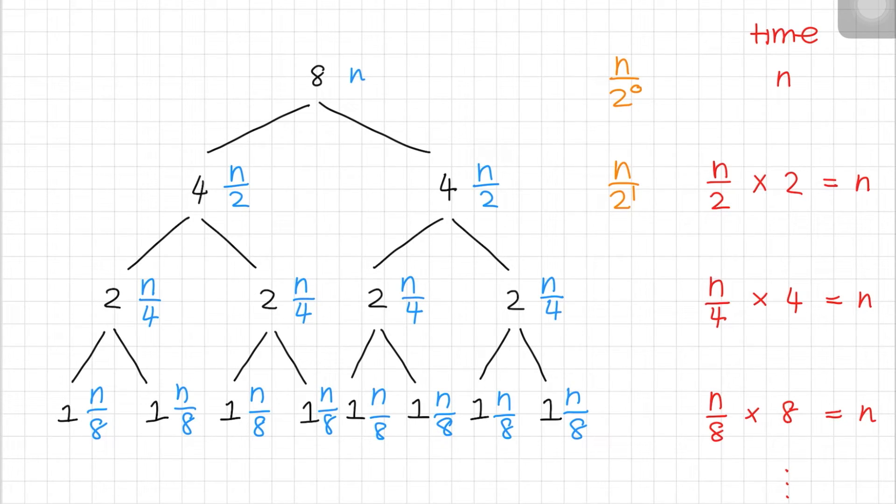Then, for the third level, as you've guessed it, n over 4 is simply rewritten as n over 2 to the power of 2. Then, n over 8 is basically n over 2 to the power of 3, and so on. Now, from here, what we want to know is at what level will the size of the array equal to 1?